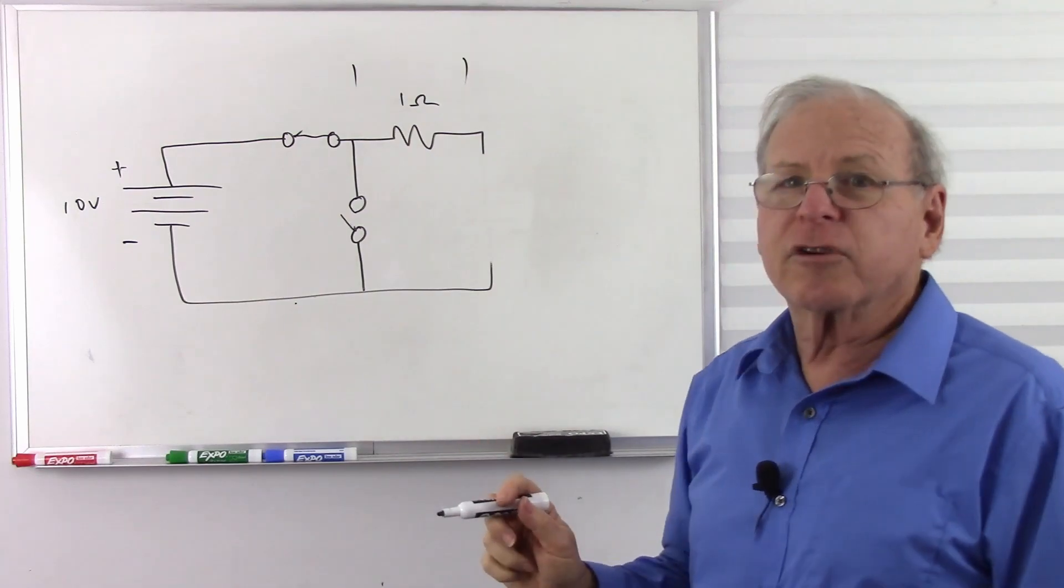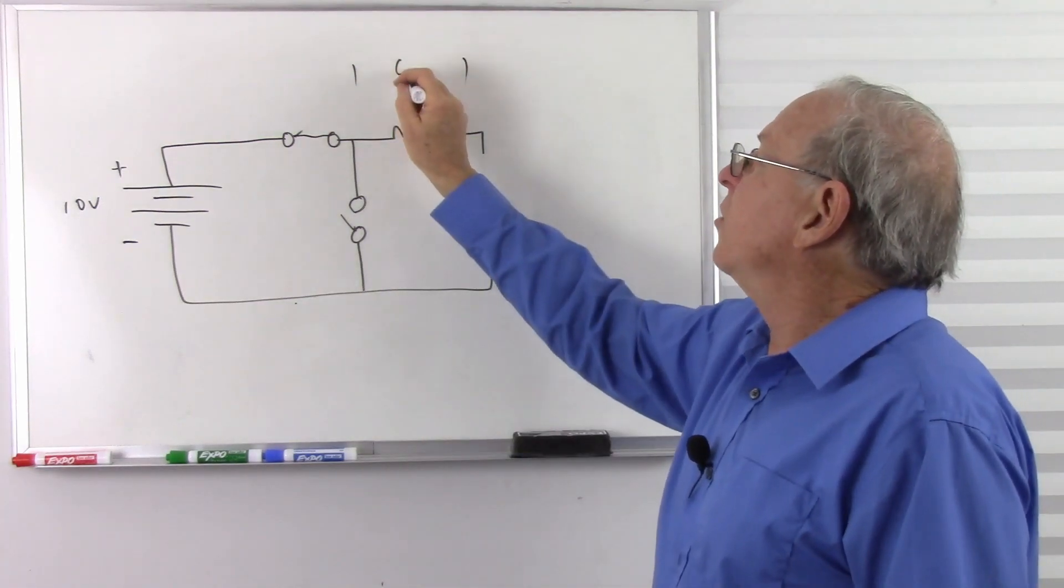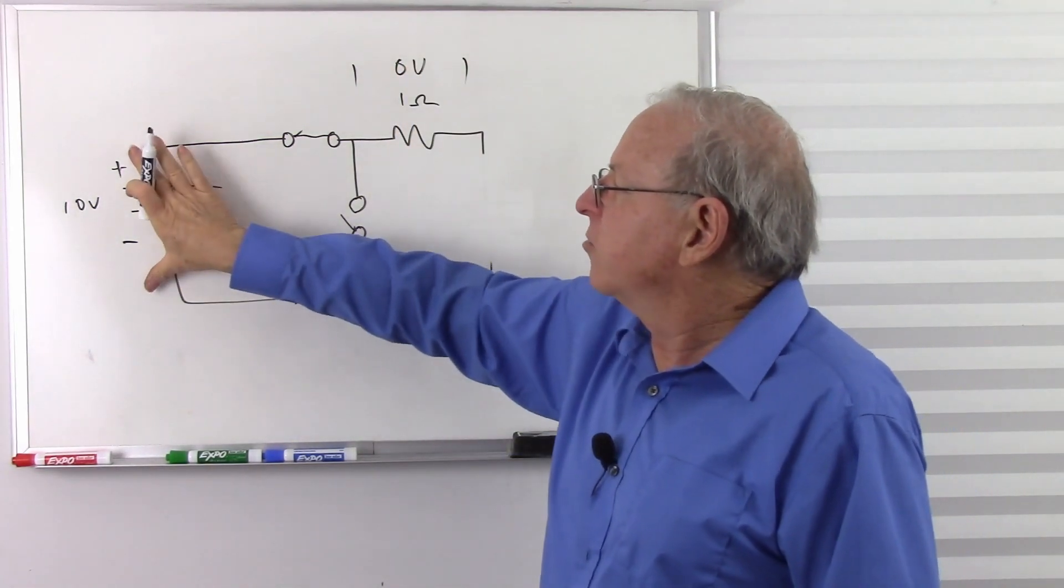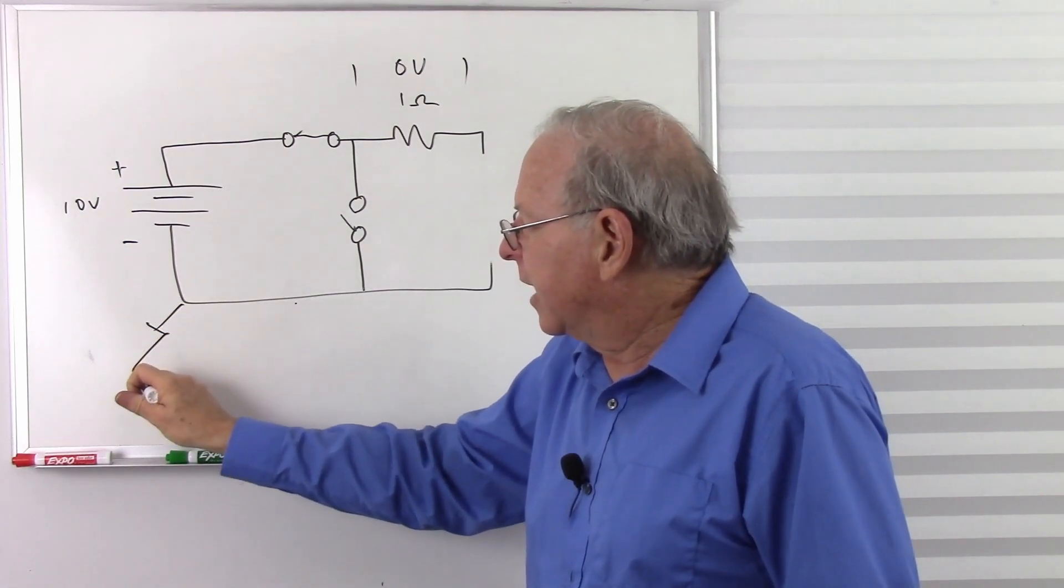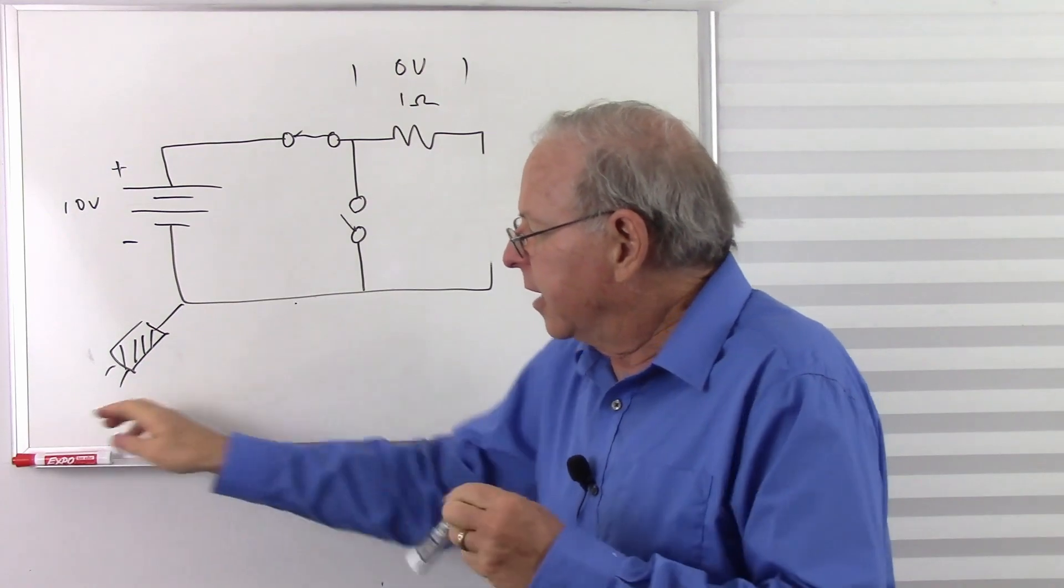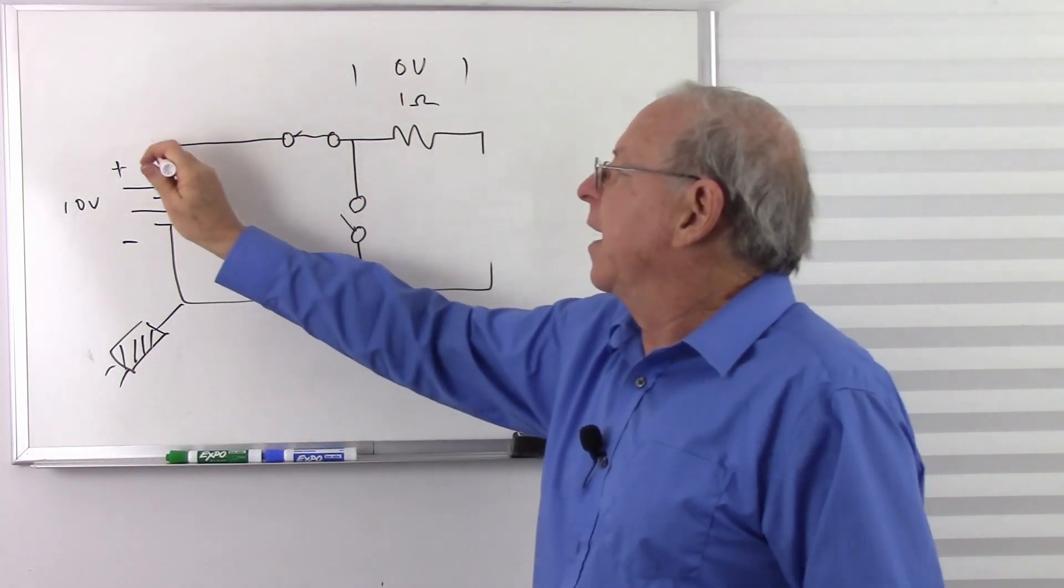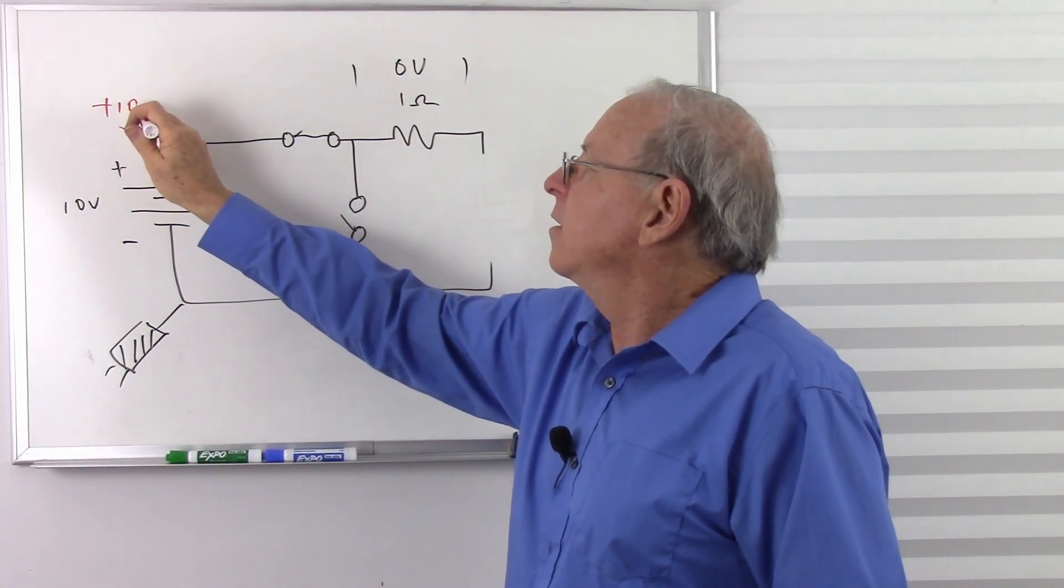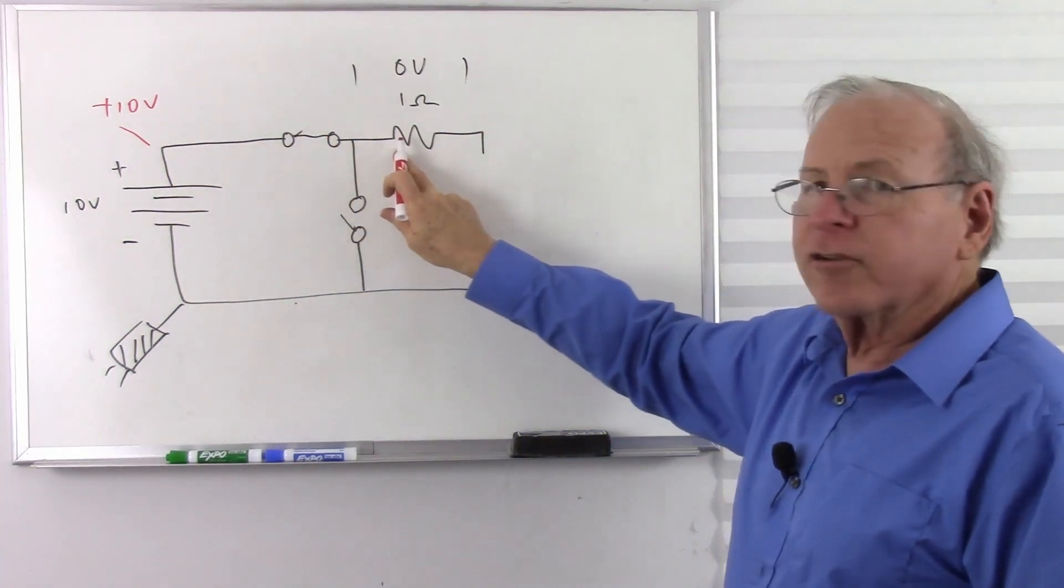So how much voltage do I lose across this resistor? Zero volts. So I start with 10 volts. Let's put our black lead here. And take our red lead and measure our voltage. We have 10 volts there.